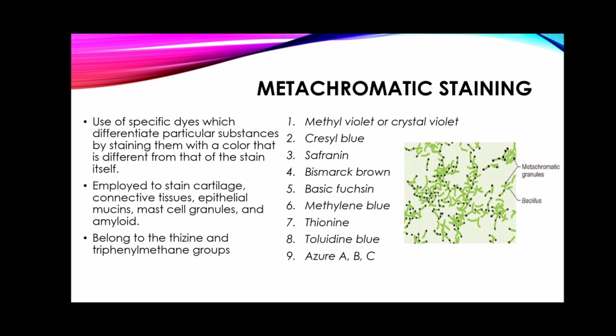Metachromatic staining is particularly employed for staining cartilage, connective tissues, epithelial mucins, mast cell granules, and amyloid. Examples of metachromatic dyes — basic dyes belonging to the thiazine and triphenylmethane groups — include methyl violet or crystal violet, cresyl blue (used to stain reticulocytes), safranin, Bismarck brown, basic fuchsin, methylene blue, thionine, toluidine blue, and azure A, B, and C.